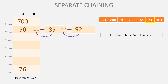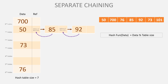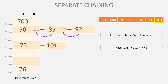Next is 73. 73 mod 7 gives index 3. Index 3 is empty, so 73 is stored there directly. Last is 101. 101 mod 7 gives index 3 as well. Index 3 already has 73, so we check 73's reference — it is null. So we attach 101 there: 73's reference now holds the address of 101.